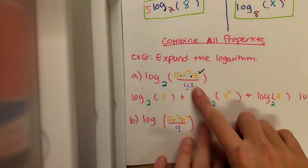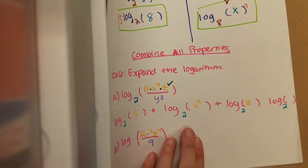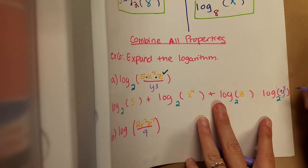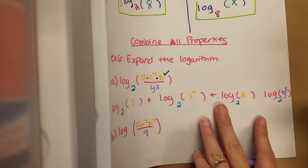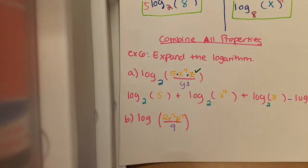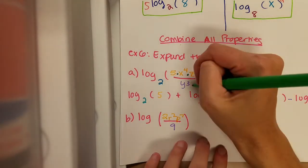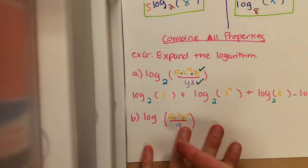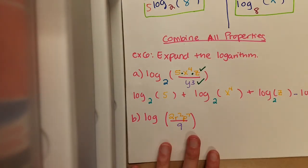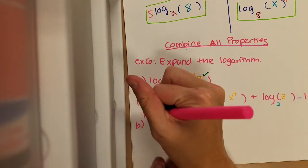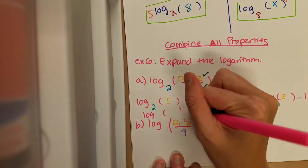Now the denominator — we put it in its own log, so I'm going to write it in the last log. Since this is dividing, we are going to be subtracting the final piece. So we have separated using the quotient property and product property, which both pieces are done. Now the final step is to be on the lookout for any power property. If you see any exponents, we're going to move them to the front of our logs. I'm going to go ahead and write out my logs again. My first one looks good to go — I don't have any exponents, so that's going to remain the same.